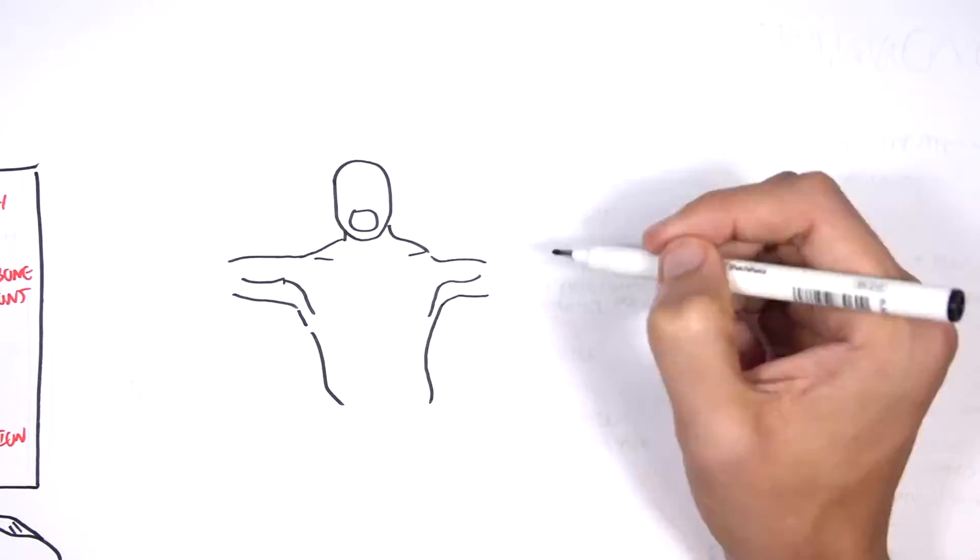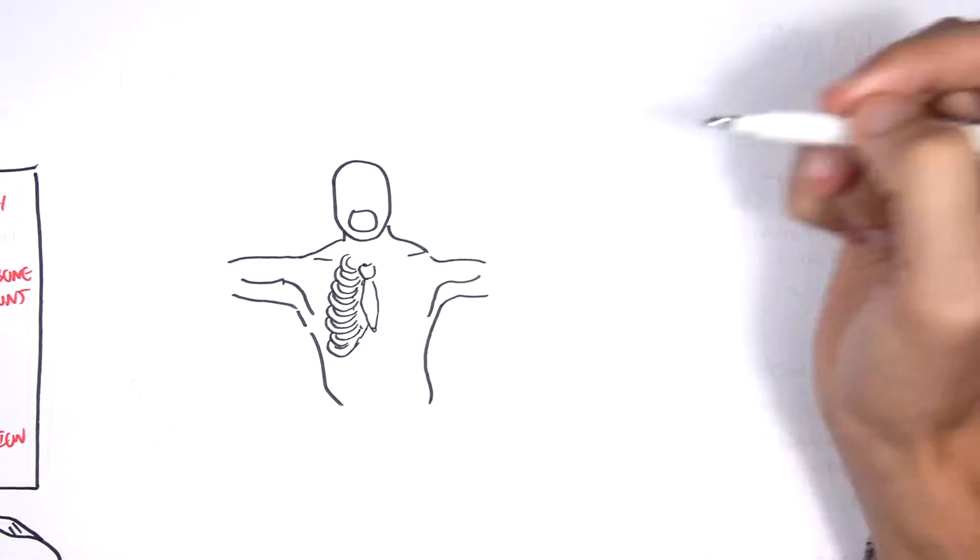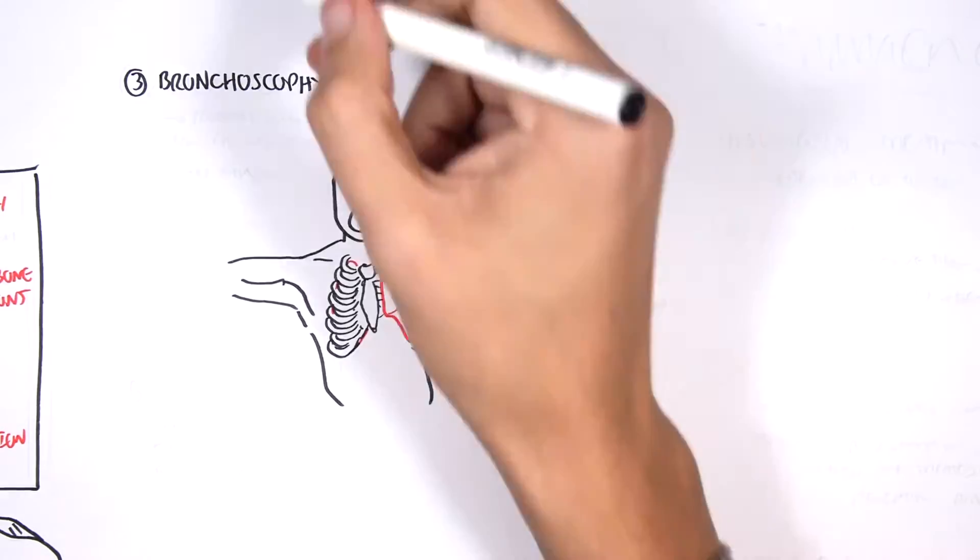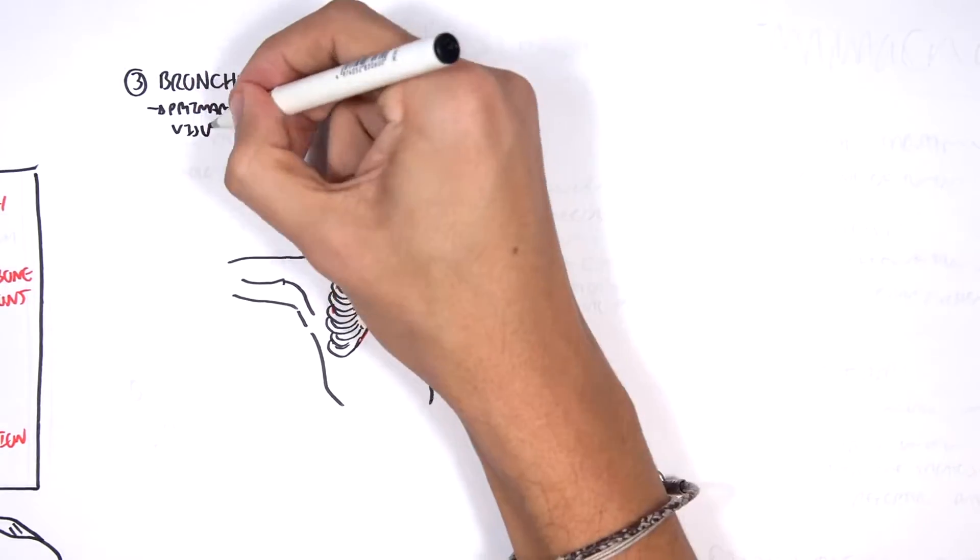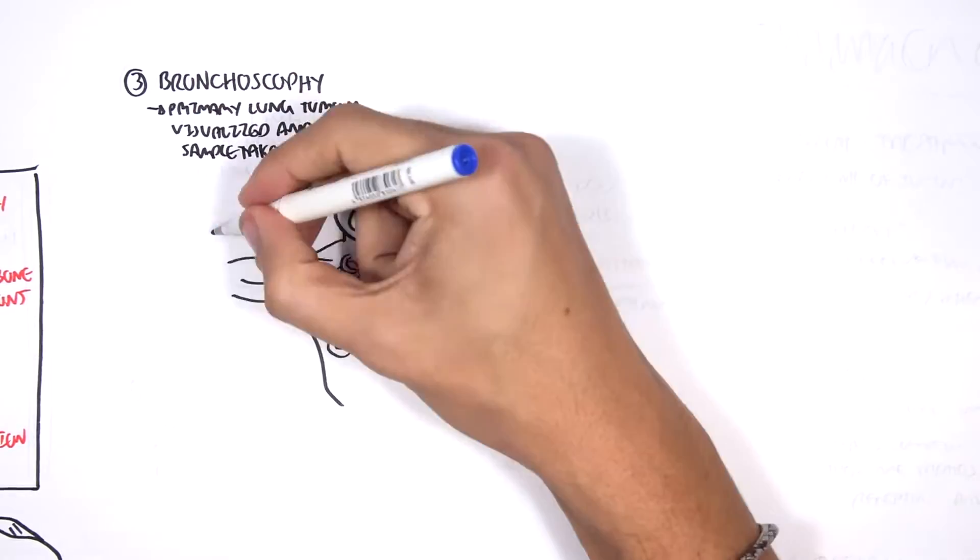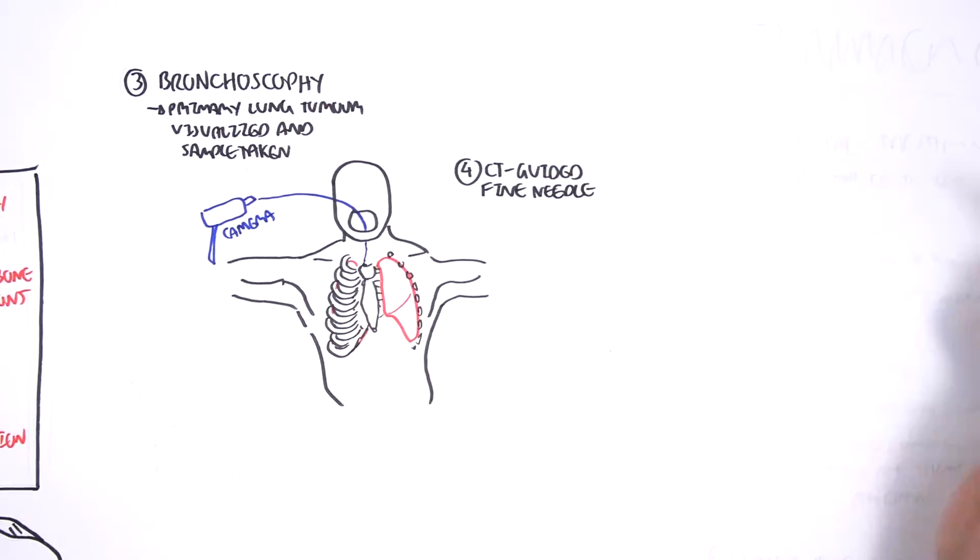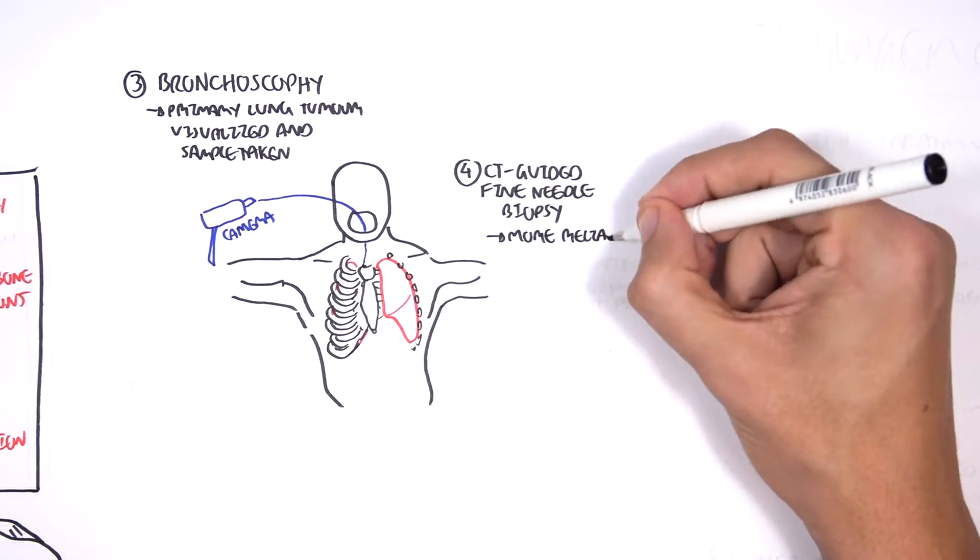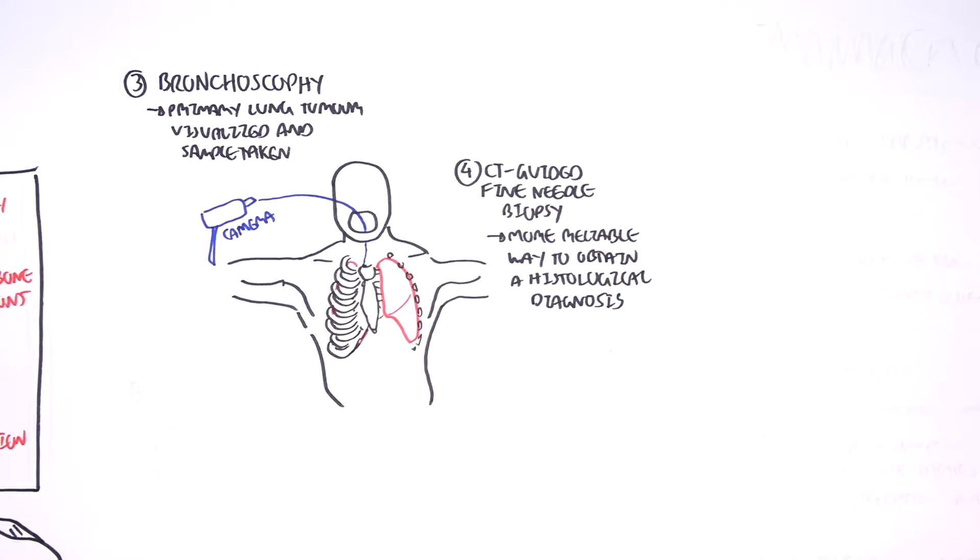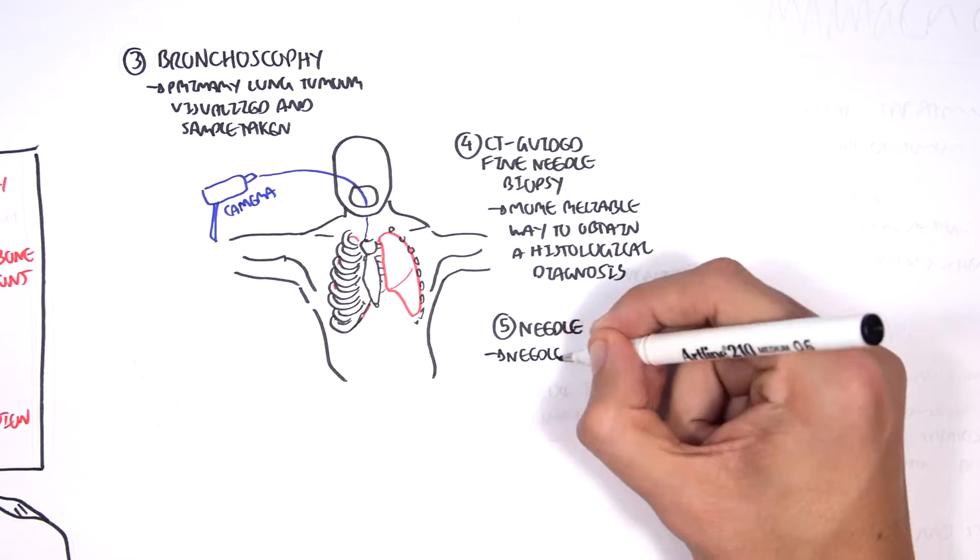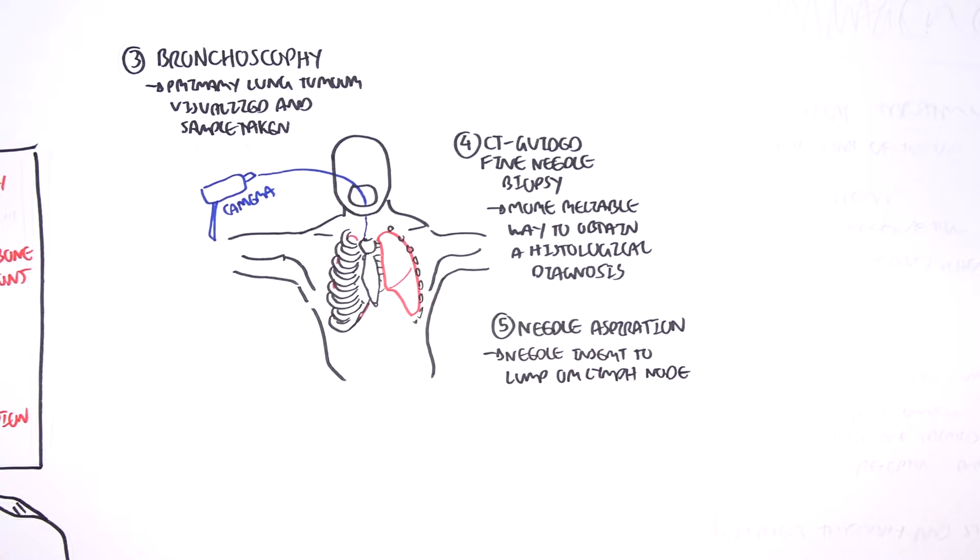Not only CT scans, but biopsy are to be performed, which include the bronchoscopy, which is where the primary lung tumor is visualized and sample is taken using the instrument. You can also perform a CT-guided fine needle biopsy, which is a more reliable way to obtain a histological diagnosis. A needle aspiration, this is where a needle is inserted in the lump on the lung or lymph node to see for lymph node involvement.